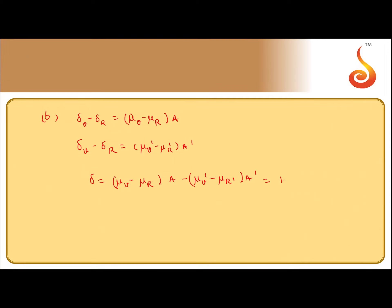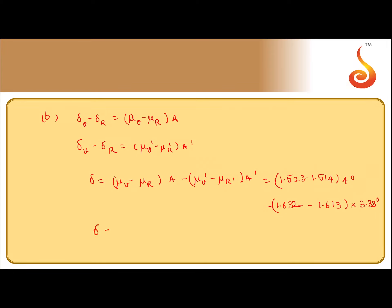Now we substitute all the values: (1.523 − 1.514) × 4° − (1.632 − 1.613) × 3.33°. This gives the net angular dispersion as 0.0273°.